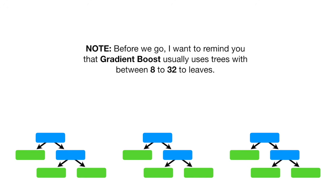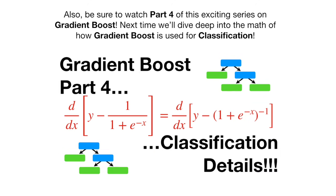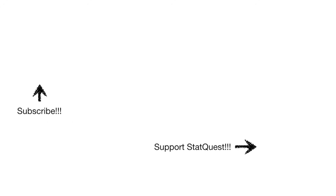Note: before we go, I want to remind you that Gradient Boost usually uses trees with between 8 and 32 leaves. We used small trees in this StatQuest because our training data set was super small. Also, be sure to watch part 4 of this exciting series on Gradient Boost — next time we'll dive deep into the math of how Gradient Boost is used for classification, derive the equation used to update the leaves, and that will make you feel totally awesome. Mega bam! If you like this StatQuest and want to see more, please subscribe. Until next time, quest on!